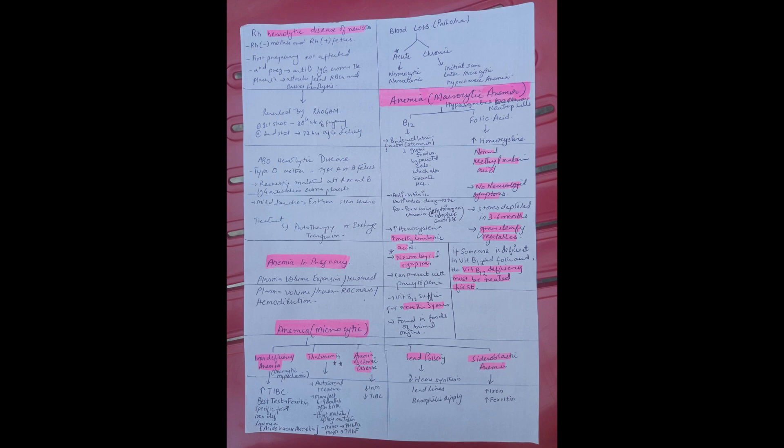Whereas in chronic blood loss, initially the same, that is normocytic normochromic, but later on, microcytic hypochromic anemia develops.